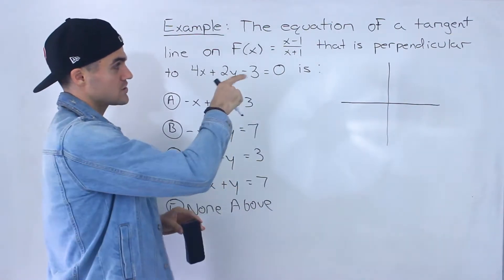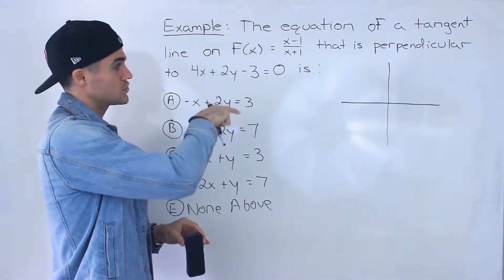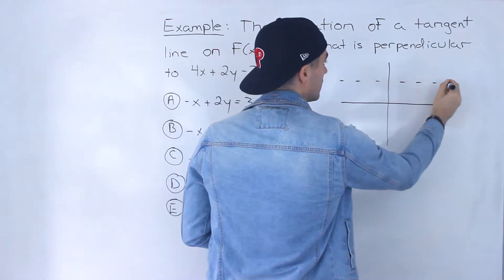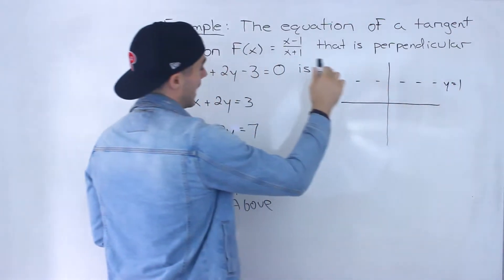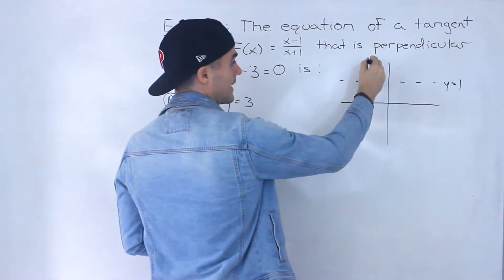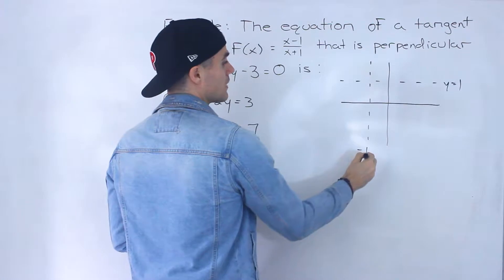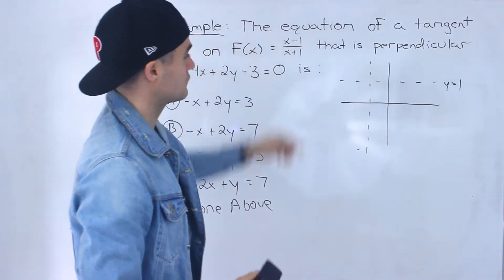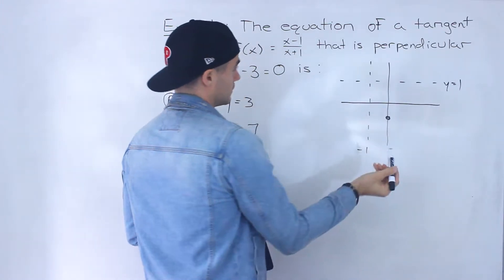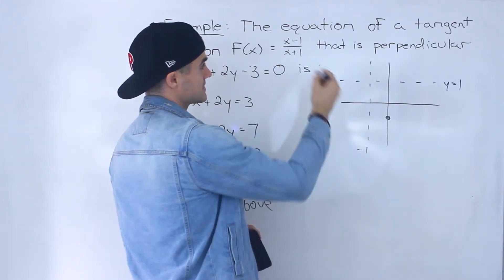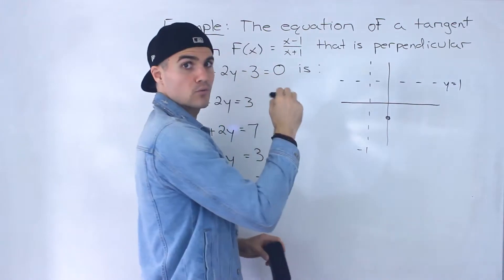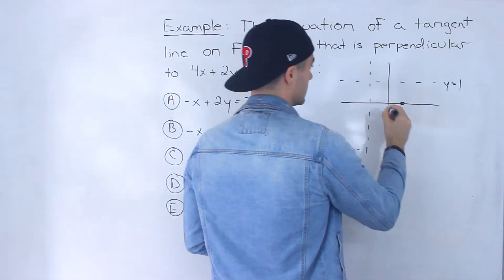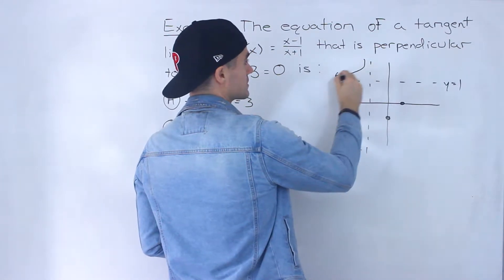From advanced functions, this is a linear over a linear function, so the horizontal asymptote is 1 over 1, and then we have a vertical asymptote at negative 1. The y-intercept is negative 1 over positive 1, which is just negative 1, and then an x-intercept at x equals 1 — the x value that makes the numerator 0. So this function basically looks like this.